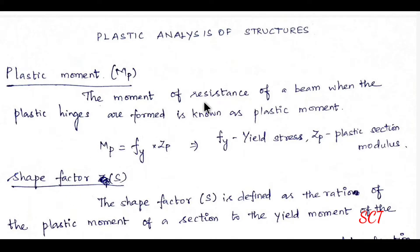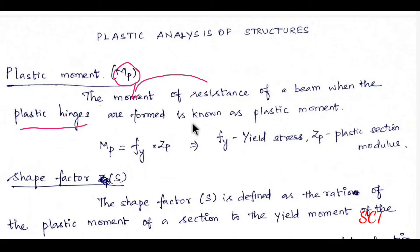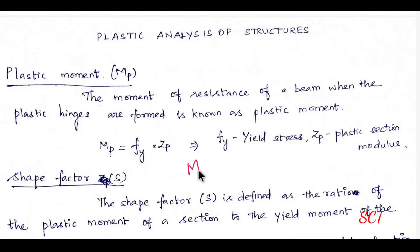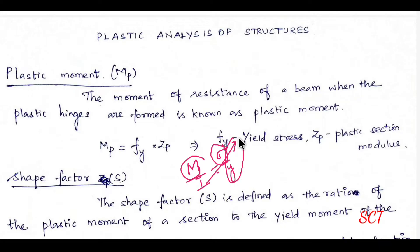The plastic moment is the moment of resistance of a beam when plastic hinges are formed. It is known as the plastic moment. The plastic moment formula involves Zp. From the theory of simple bending: M/I = σ/y, so the moment M = σ × I/y = σ × Z, where Z is the section modulus.